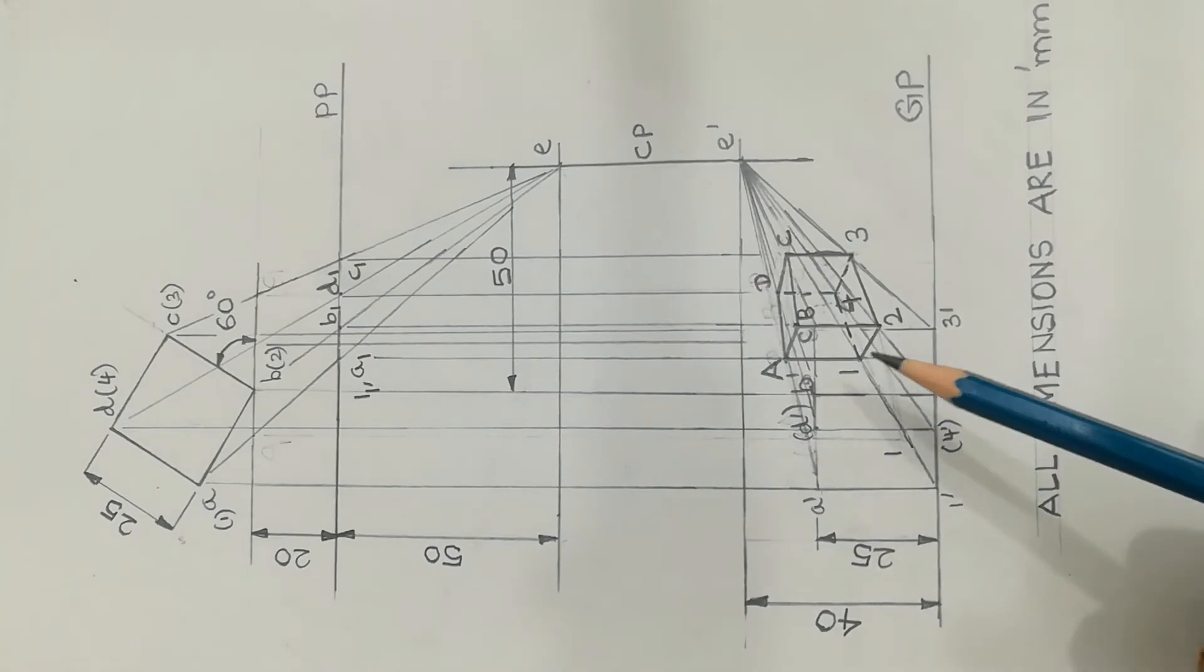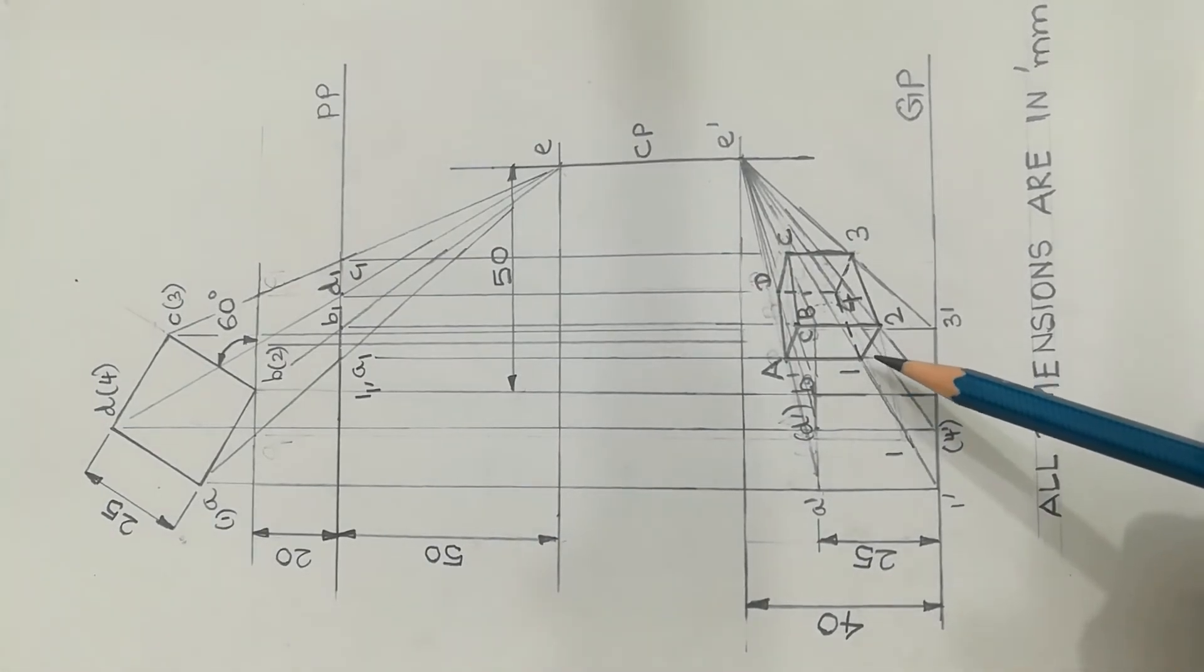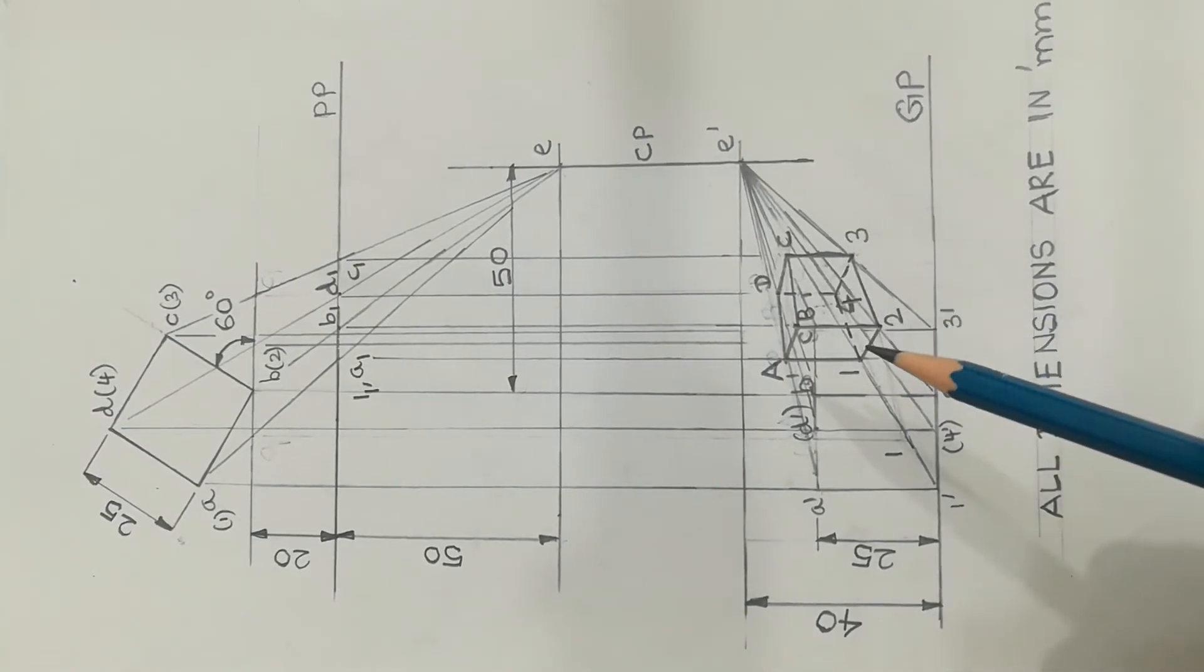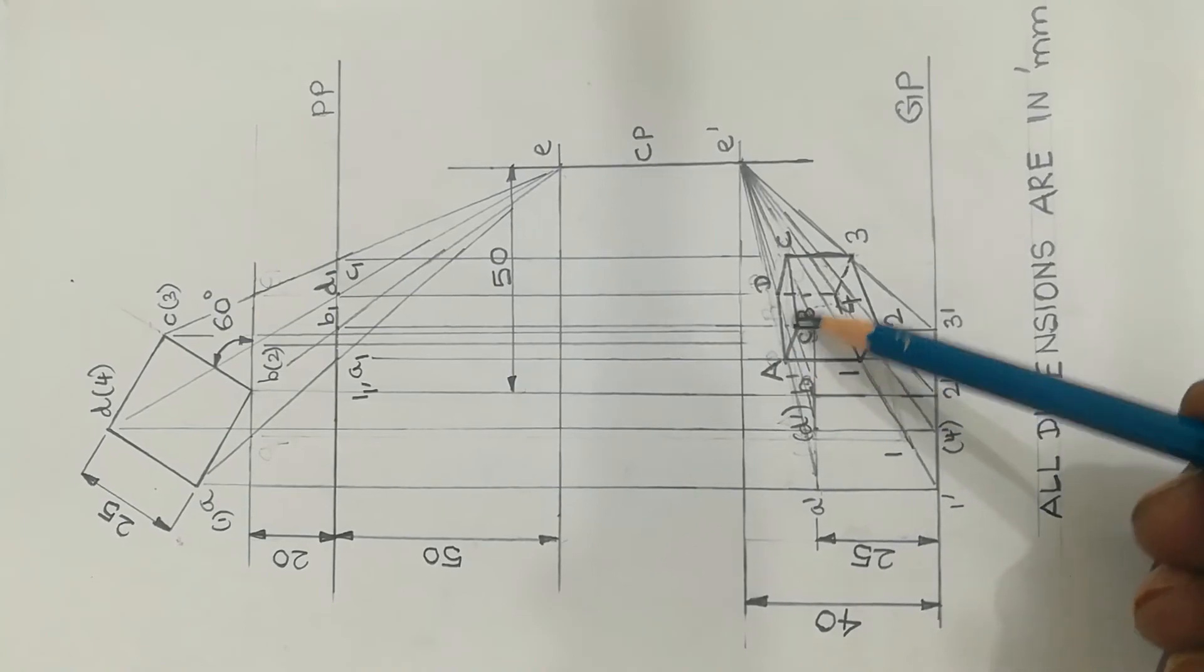It is the final answer, 3D - three-dimensional representation called the perspective projection answer diagram. Base corners are marked as 1, 2, 3, 4. The top corners are marked as A, B, C, D.